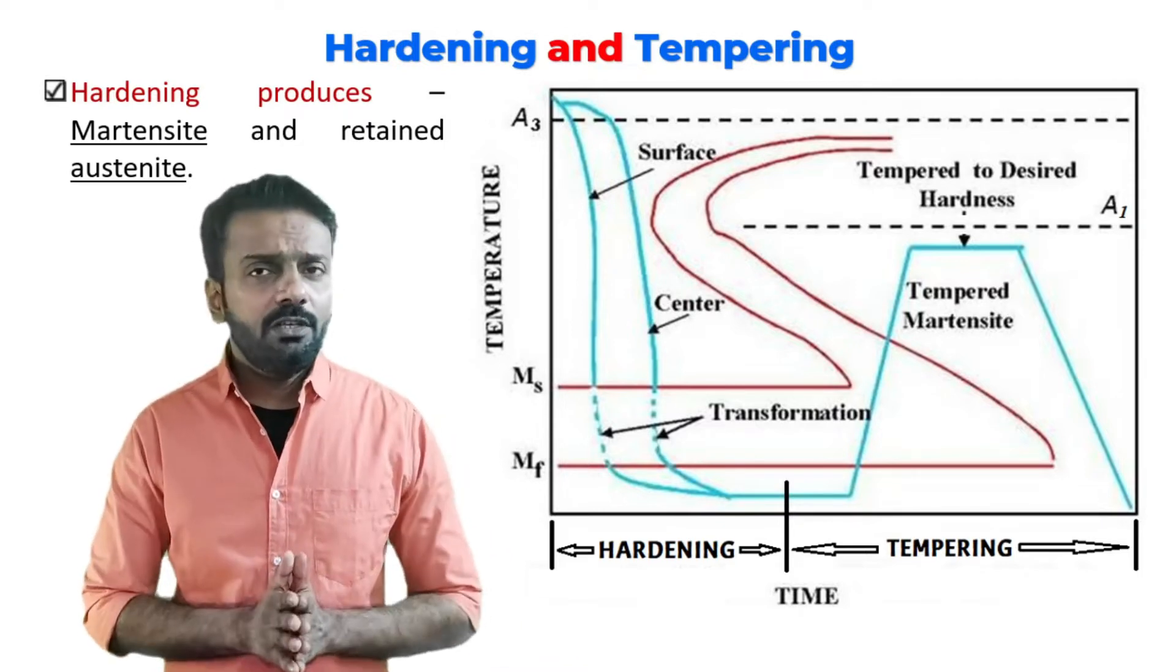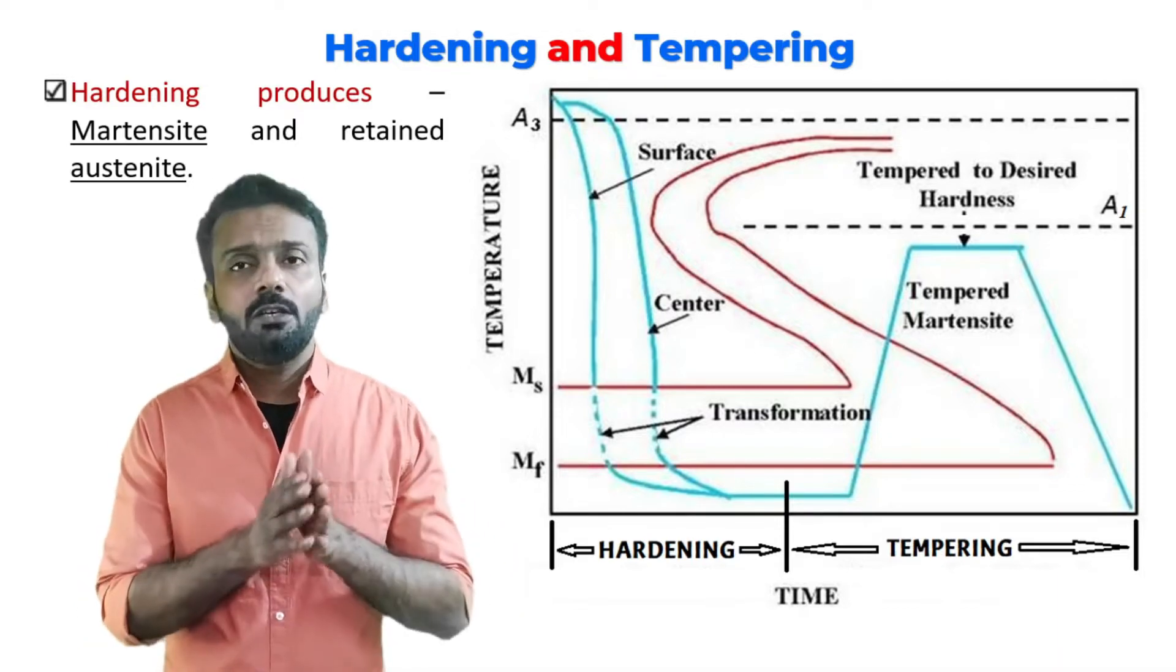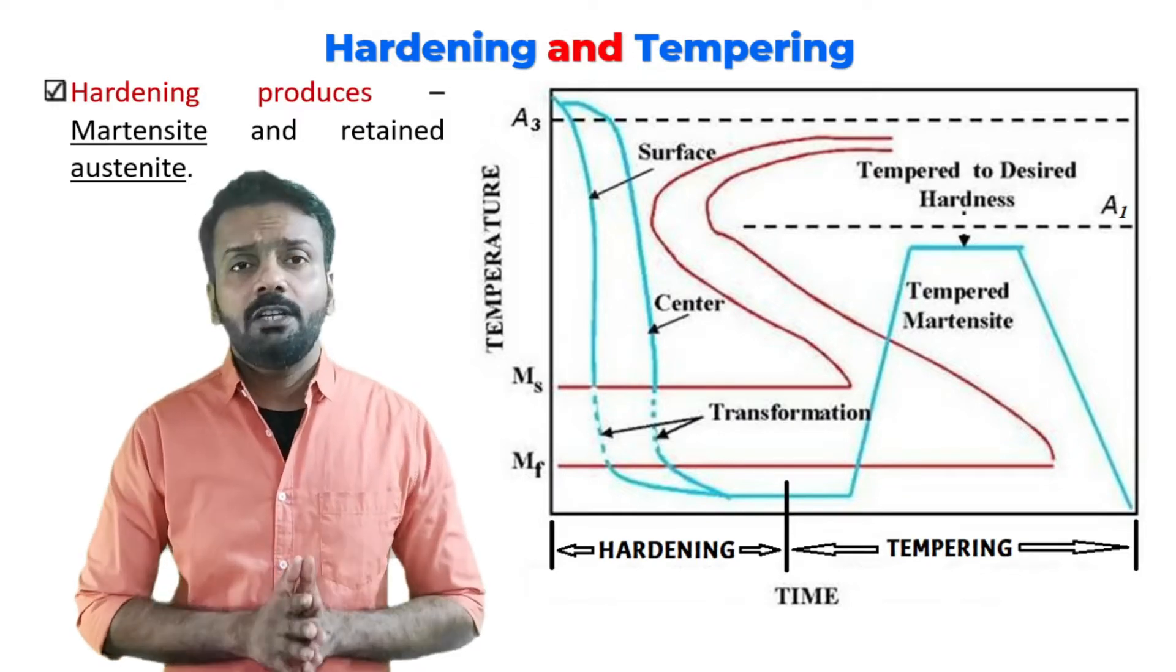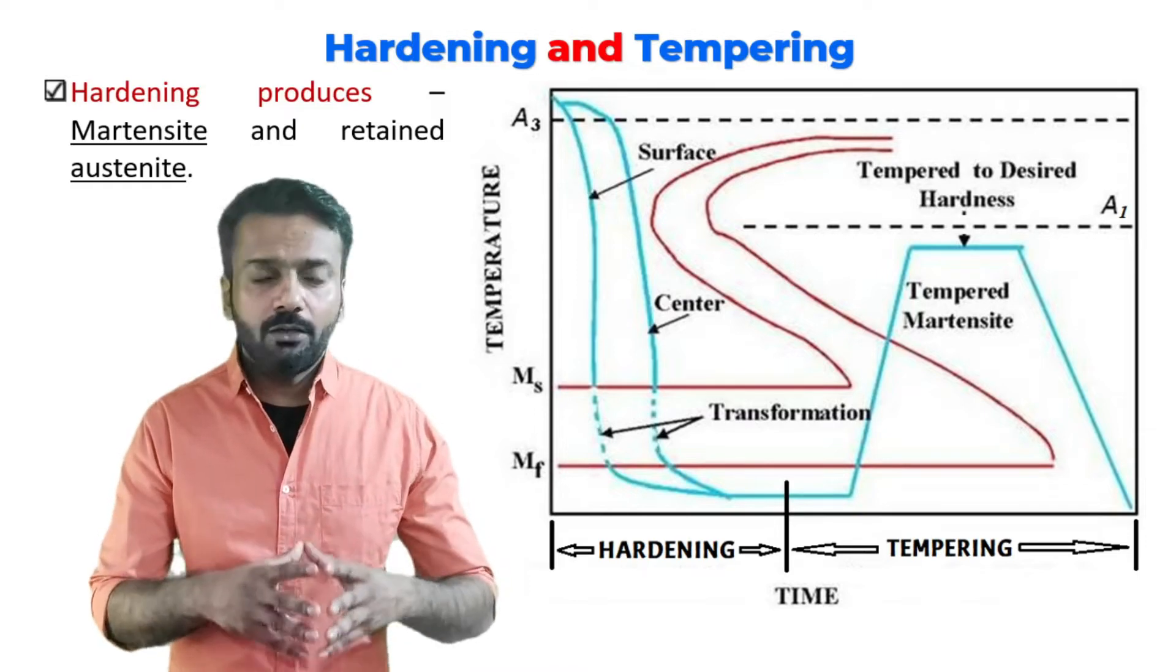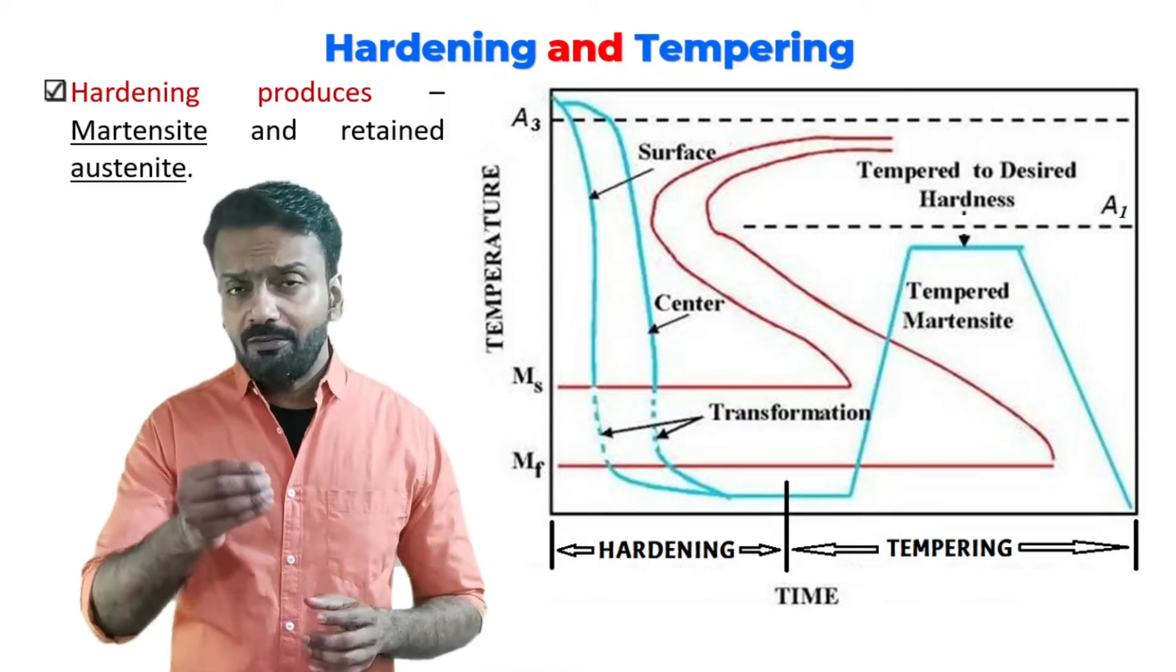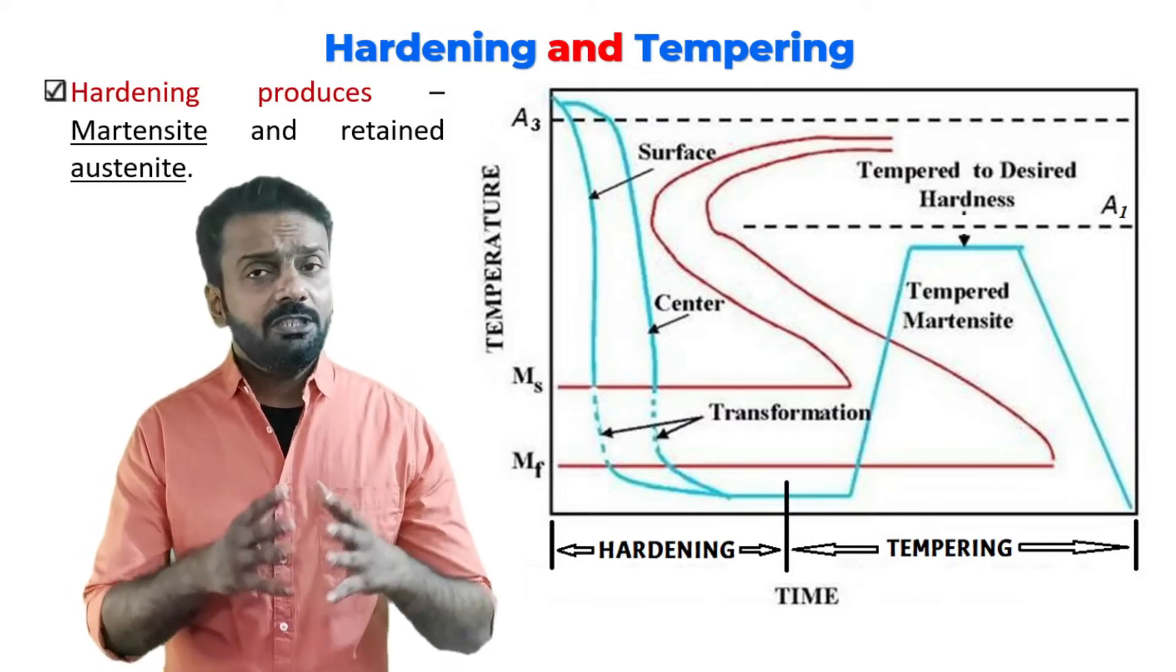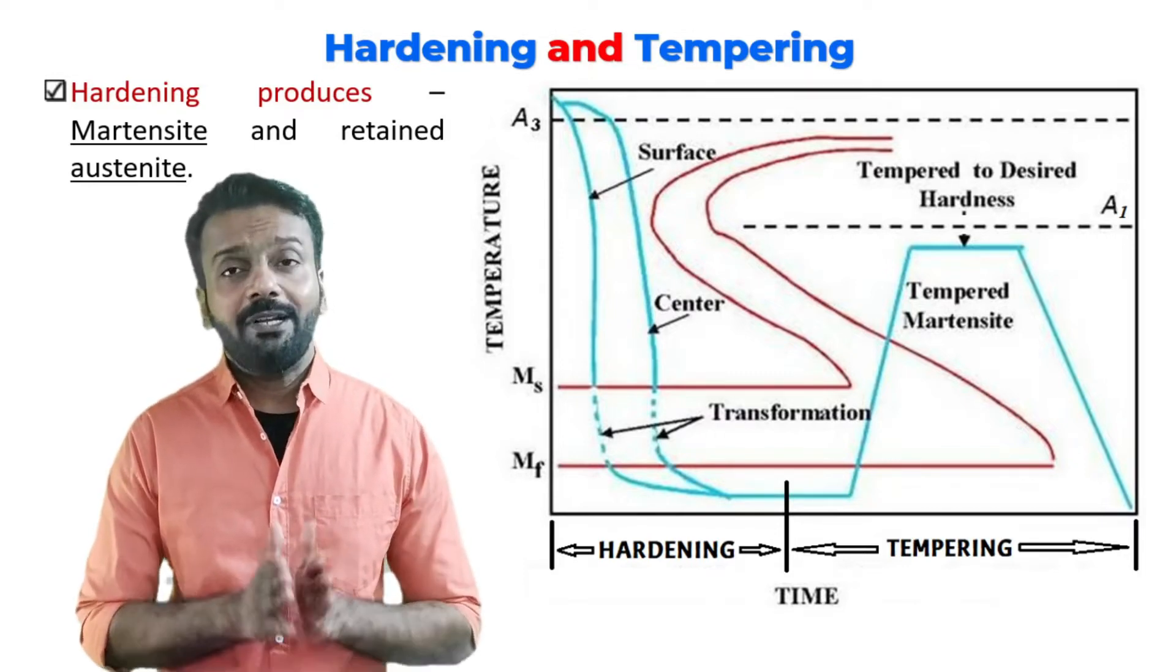Here you are looking at the cooling curve, which shows two different types. One cooling curve is for the surface and the other is for the center, showing the cooling rate of the material on the surface and in the bulk - that is, in the center of the material. This is the main thing we have to consider when doing hardening heat treatment.